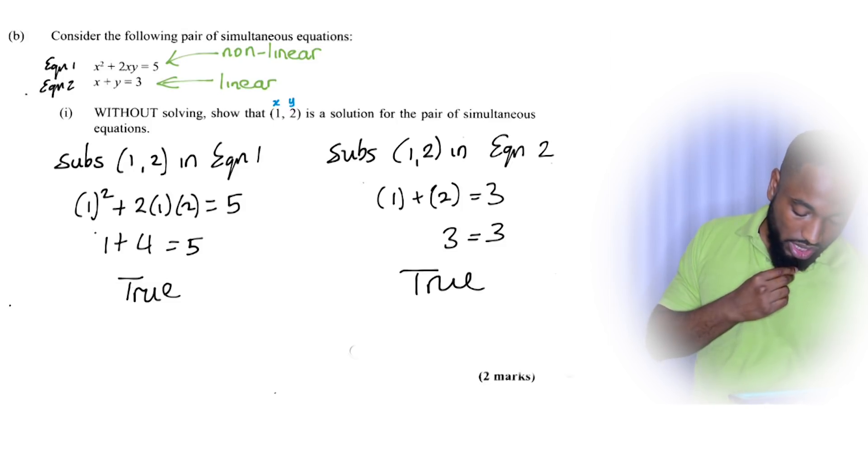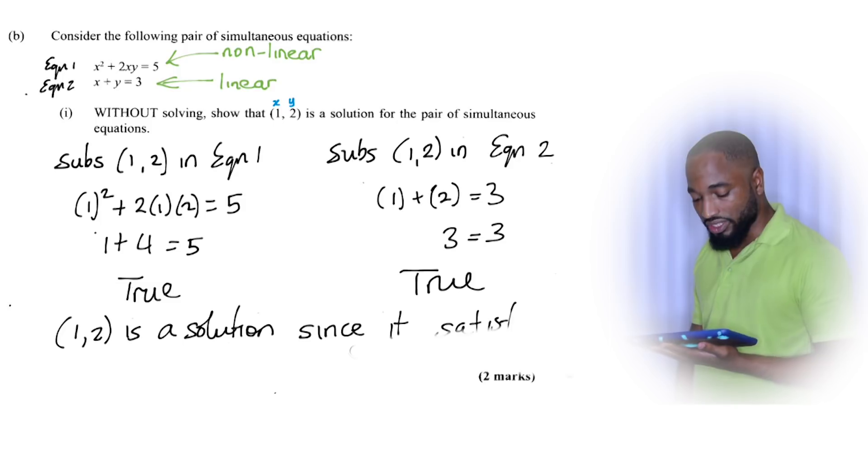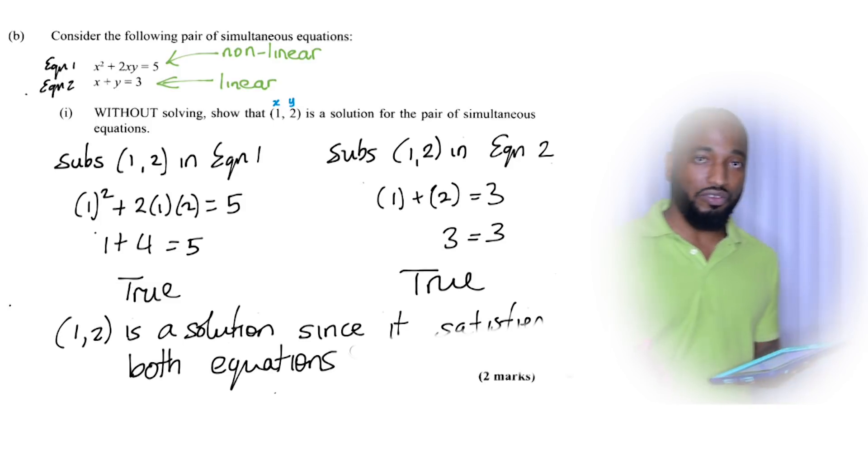So it means it's true. Or you can do it another way where you substitute just the x value and find y, and the y value turns out to be 2 in each case. Either way, (1,2) is a solution since it satisfies both equations. My neighbor's music won't shut up, so y'all just have to deal with the background music in this video, all right? Listen to the maths.